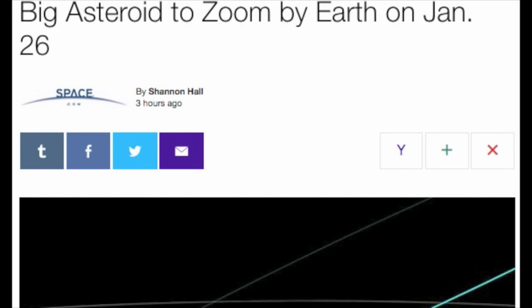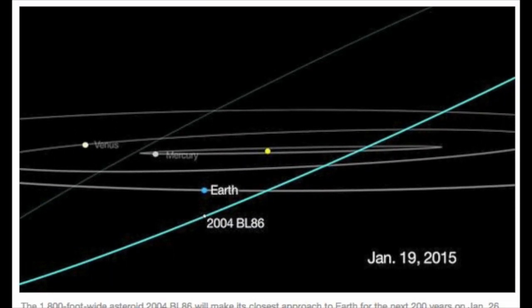Big Asteroid to Zoom by Earth on January 26. A large asteroid about a third of a mile wide will zoom safely by Earth this month, and mark the planet's closest encounter with a space rock of its size until 2027.